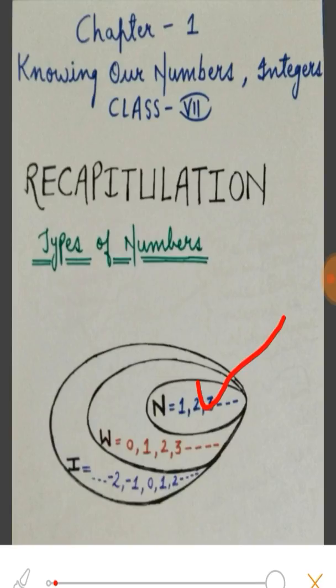Whole Numbers comprises a complete set of natural numbers, but including 0. Whole Numbers are denoted by W and they are 0, 1, 2, 3 and so on. Next is Integers.